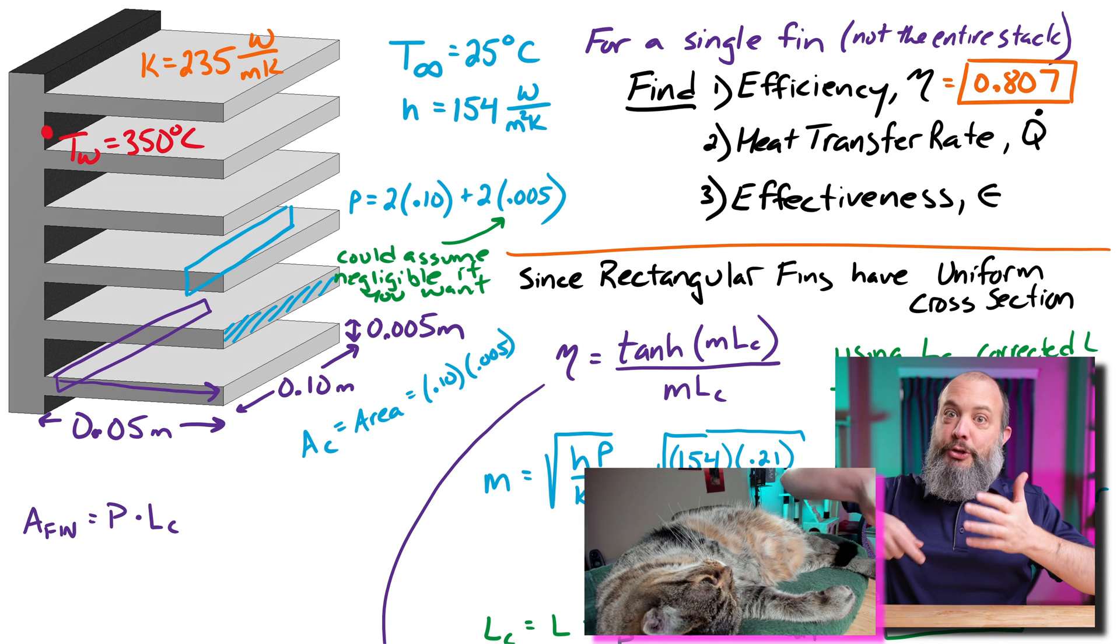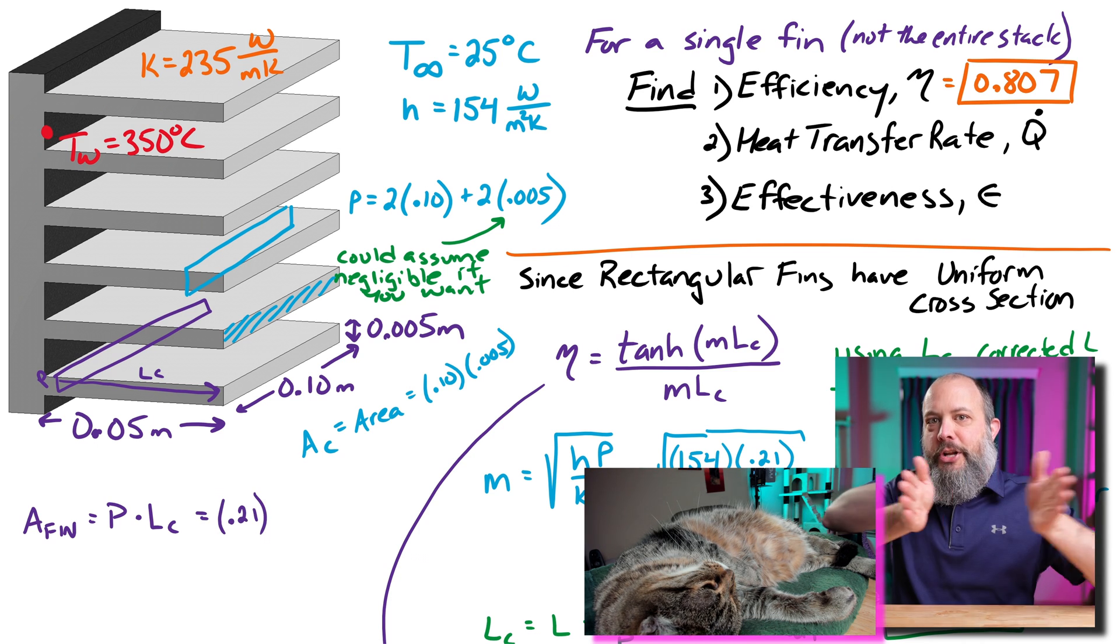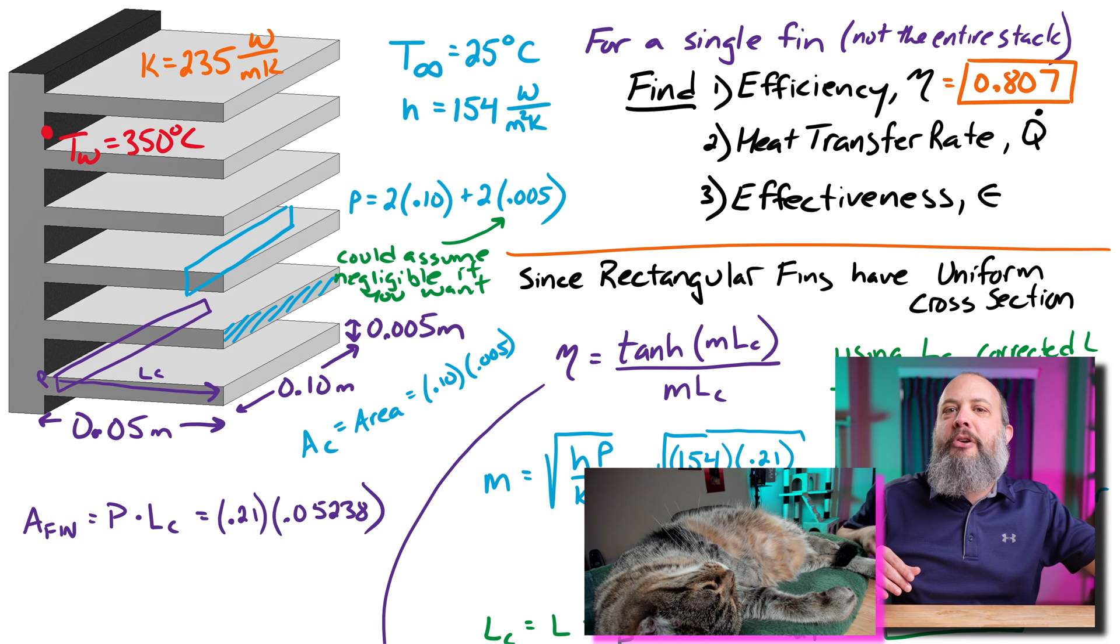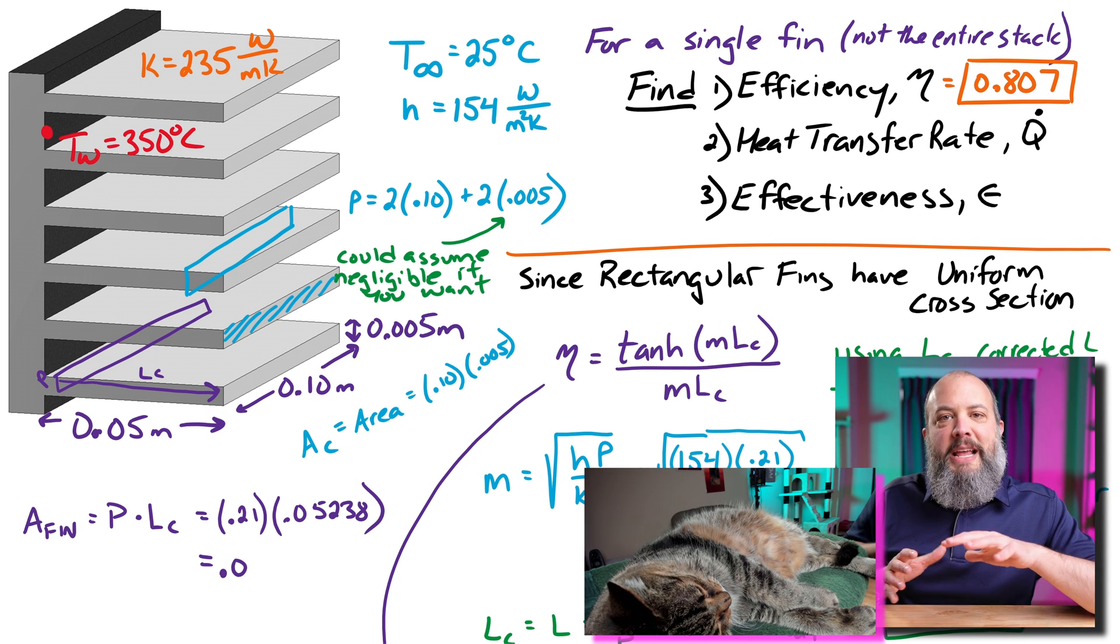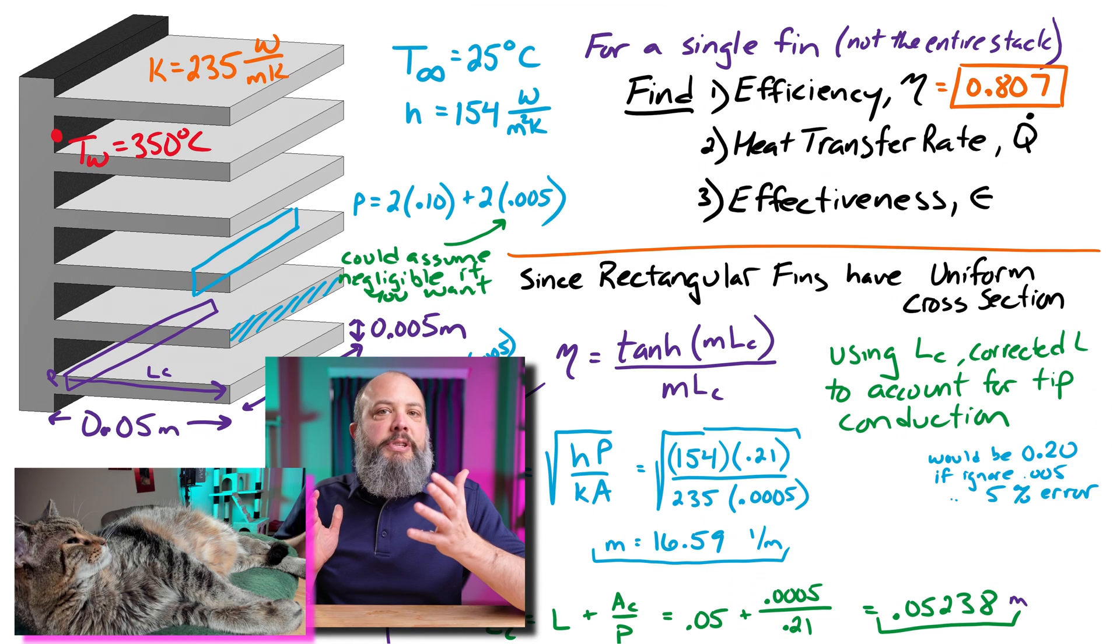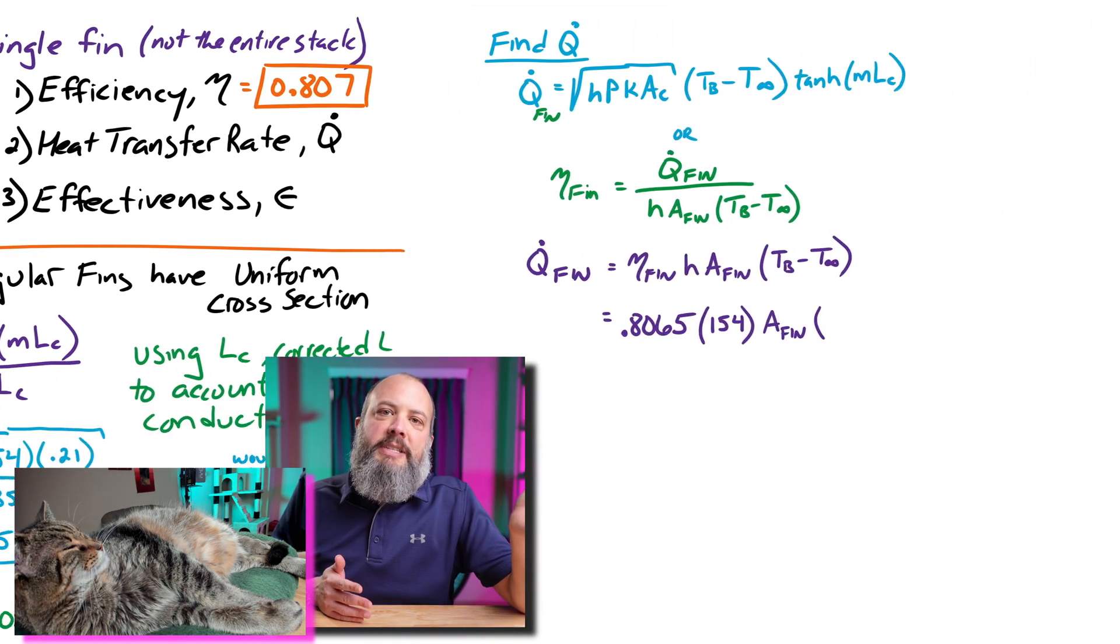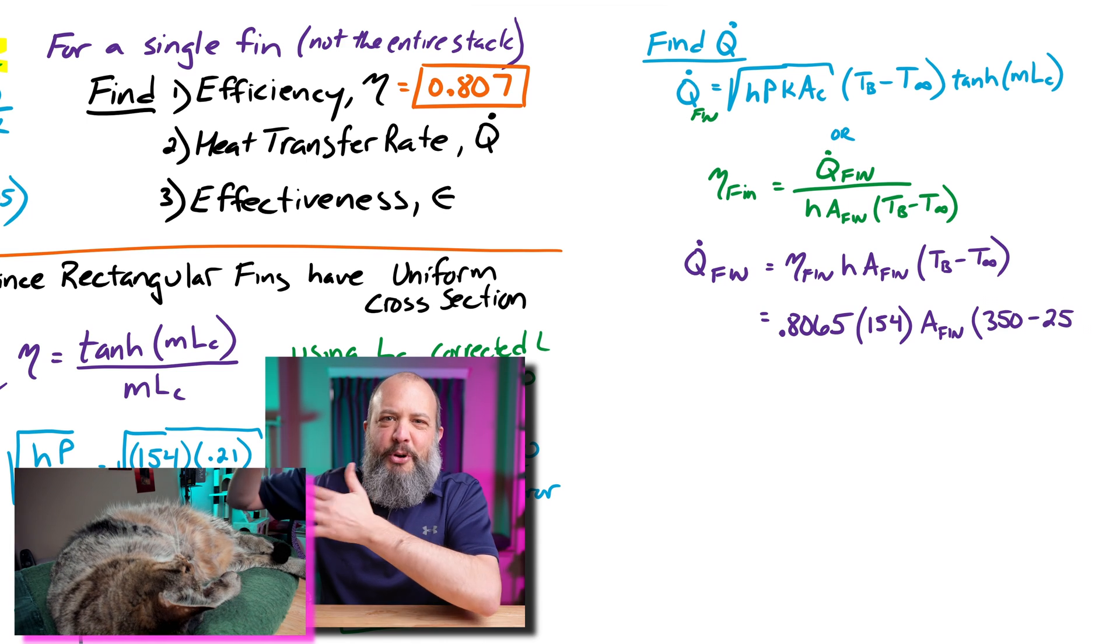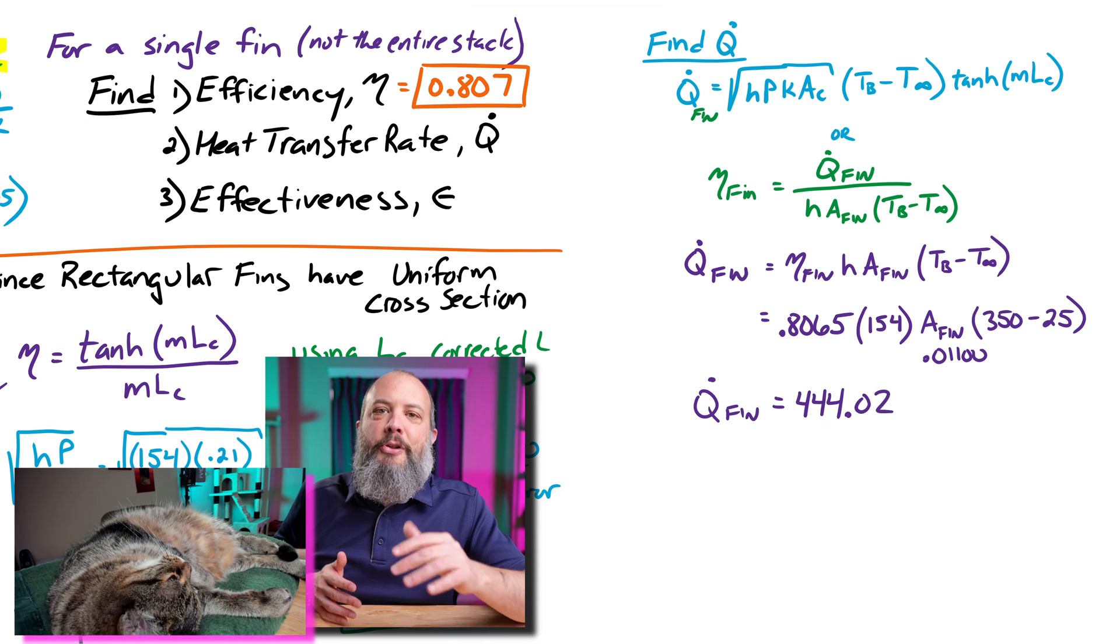And again, for me, I'm going to use the actual perimeter, my 0.21, including the thickness because the 5% error makes a difference. And I'm also going to use the corrected length so that I can kind of account for the extra area that's at the tip. So that's my 0.21 times my 0.05238. And that gives me a surface area for my rectangular fin of 0.011 meters squared. And my two temperatures were 350 degrees, which was the wall temperature, 25 degrees for the air temperature. I don't have to convert them to Kelvin because I'm going to be subtracting them. So if I added 273 to both terms, it would just cancel out anyway. And with that, 444 watts is my heat transfer through the fin.